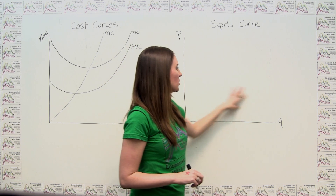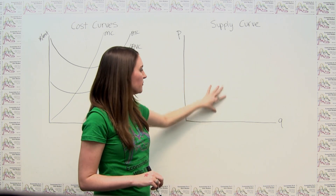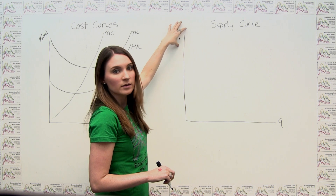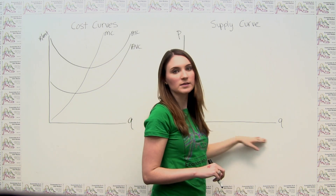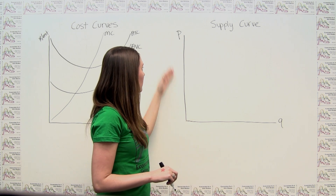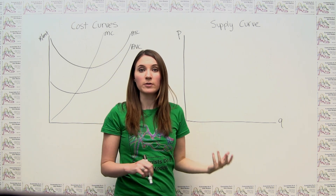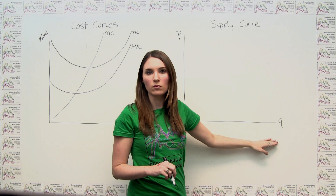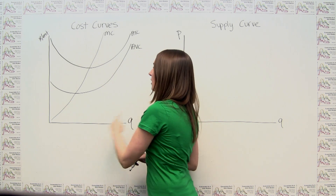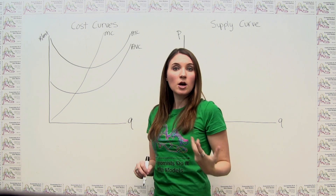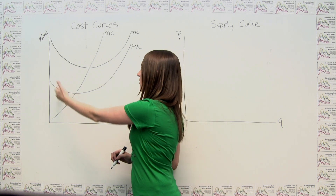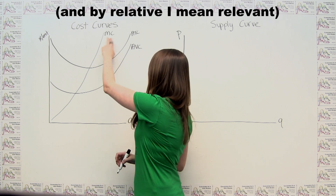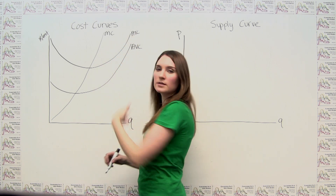On the right, I've drawn the framework for a supply curve, which is just the relationship between the market price and quantity supplied. We're going to think about, as we vary our market price — which our individual firm takes as given — how much output this firm wants to produce at each price. That comes from the graph on the left, which shows the cost curves representative of an individual firm: marginal cost, average total cost, and average variable cost.